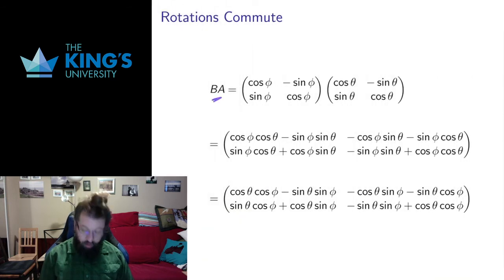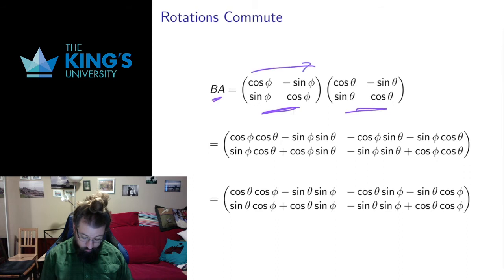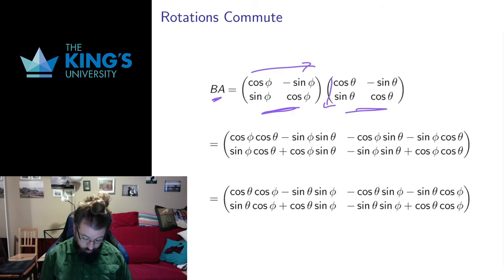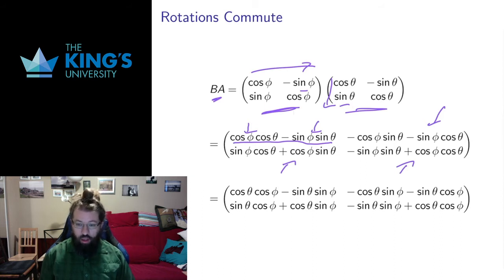Now let's do B times A. Here I write the phi matrix on the left, the theta matrix on the right — switched from before. In terms of composition, this means that A happens first. I do the same thing: across the first matrix and down the second. Cosine times cosine gives the cosine term; sine times sine gives the sine term — this is the first entry. I get the second, third, and fourth terms of the matrix multiplication. And this already looks similar in form to what was on the previous slide.